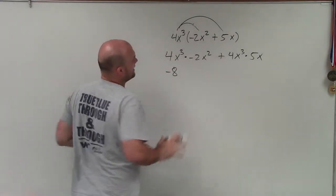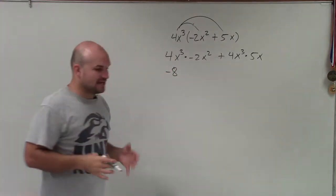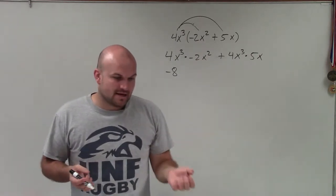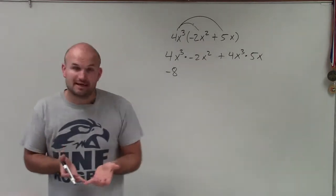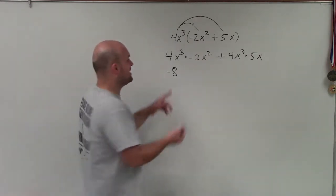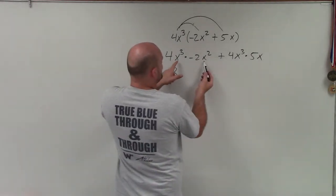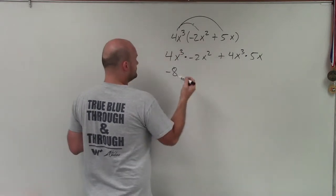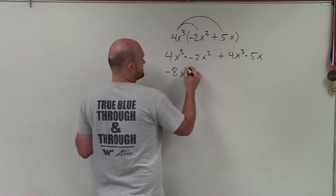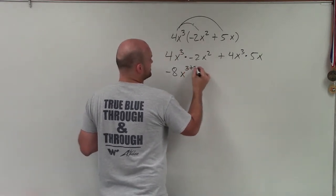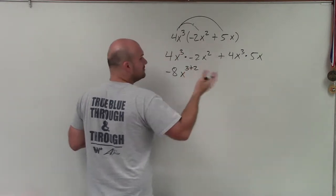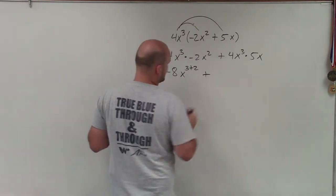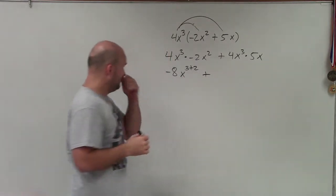When multiplying exponents, I've got to make sure that if I have the same base, I can combine them. When you have the same base, all you simply do when multiplying is add the exponents. So this is x to the 3 plus 2, which is x to the fifth.